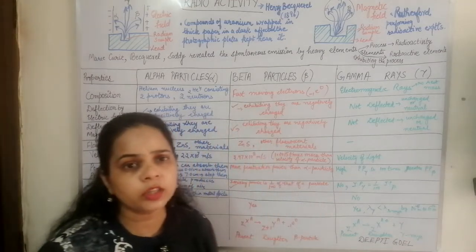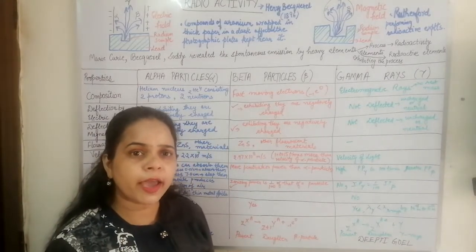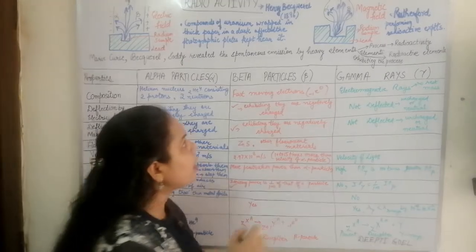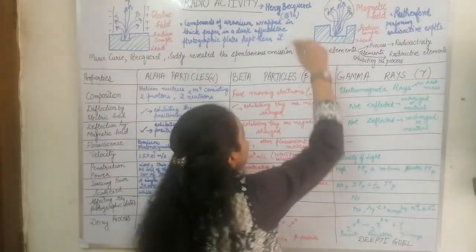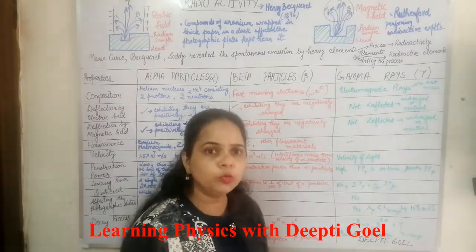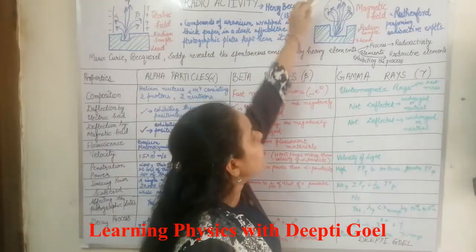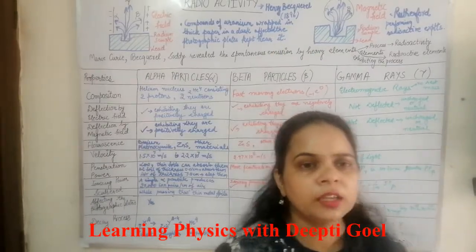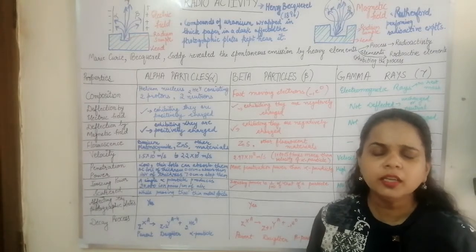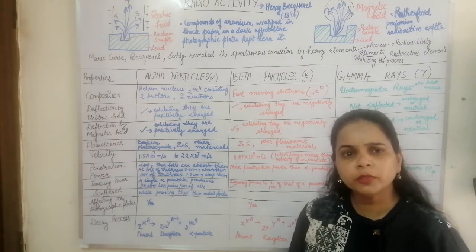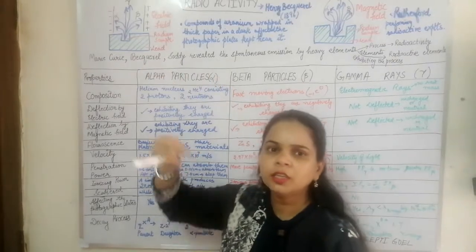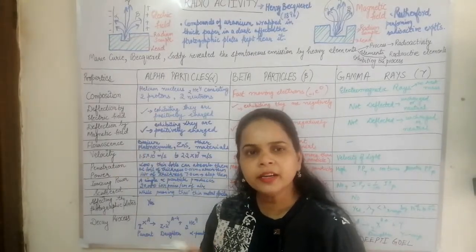Rutherford and his co-workers also placed uranium under a magnetic field. They found that some particles deflected toward the north pole, some toward the south pole, and some went undeflected. From this they concluded that there were three types of emissions: alpha emission, beta emission, and gamma ray emission.